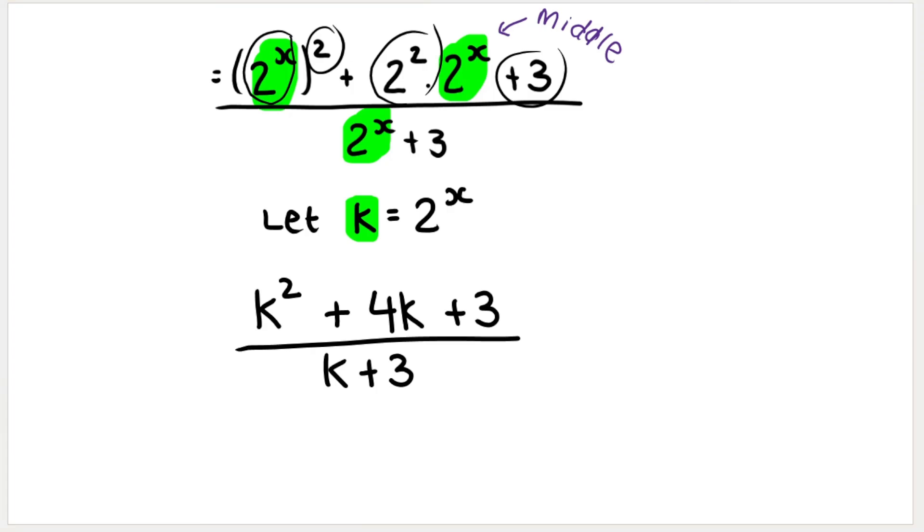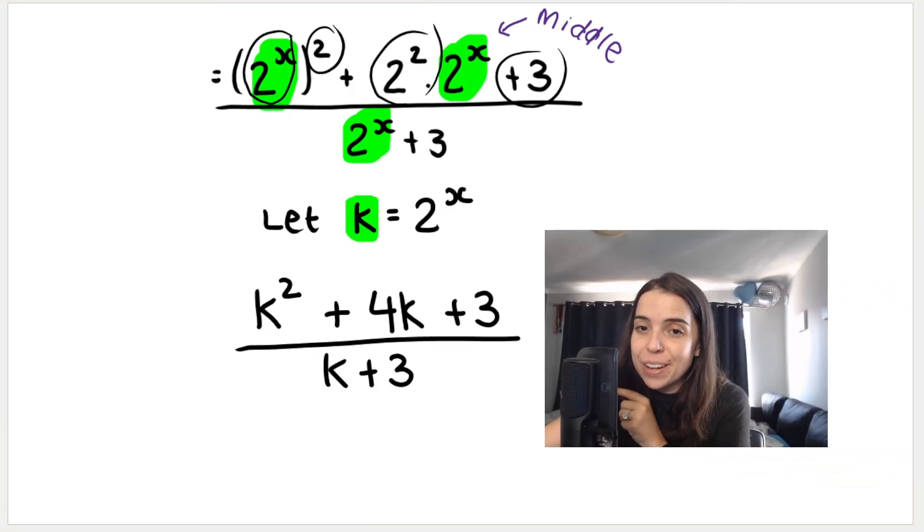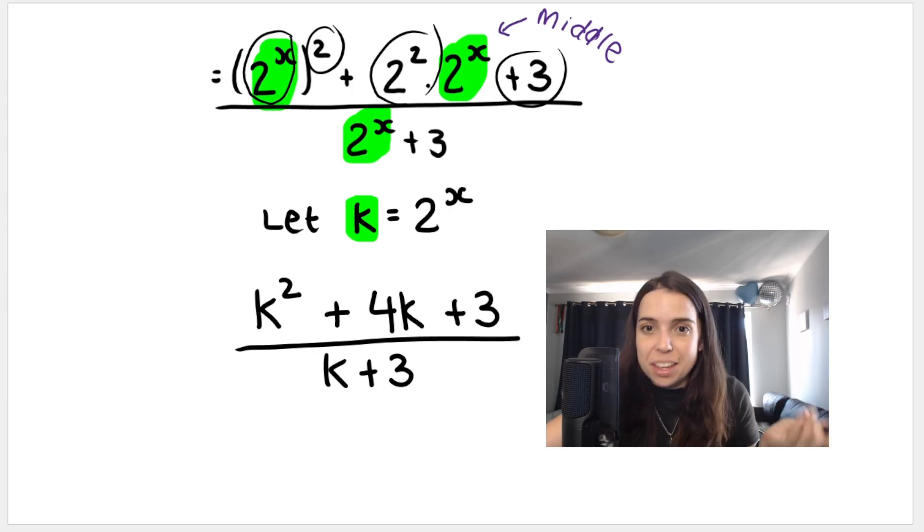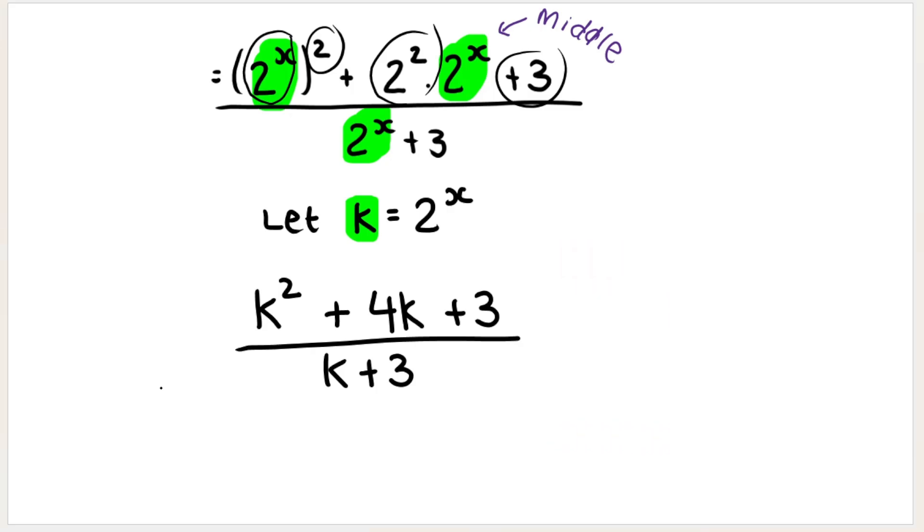Now we have a fraction over here which looks a lot simpler to factorize and therefore simplify. So if I had to give you this, you'd be able to do this in grade 9 or grade 10 already, even grade 9. How do you simplify this fraction over here? Well, first you need to do a trinomial at the top. So I hope you know how to do that trinomial. It'll be K plus 3 and K plus 1. And at the bottom, I have K plus 3.